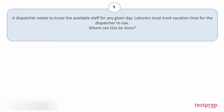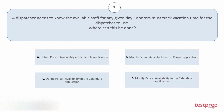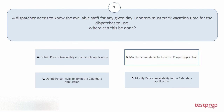Question number 1: A dispatcher needs to know the available staff for any given day. Laborers must track vacation time for the dispatcher to use. Where can this be done? Your options are: a) Define person availability in the People application. b) Modify person availability in the People application. c) Define person availability in the Calendars application. d) Modify person availability in the Calendars application. The correct answer is option b.